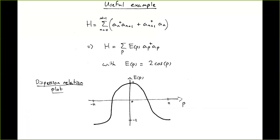Because the Hamiltonian is translationally invariant, a Fourier transform gives the dispersion relation e(p) in terms of lattice momentum p, yielding a simpler formula for the Hamiltonian in terms of momentum creation and annihilation operators. For finite-range translationally invariant models, the dispersion relation is a sum of cosines with real coefficients. The simple example to keep in mind is the nearest-neighbor hopping Hamiltonian, whose Fourier transform gives e(p) = 2 cos(p).